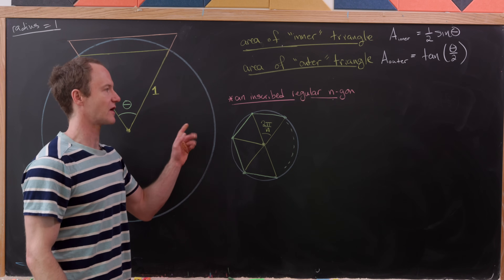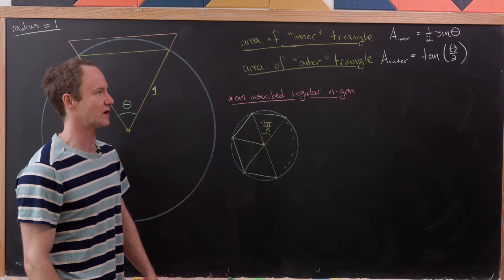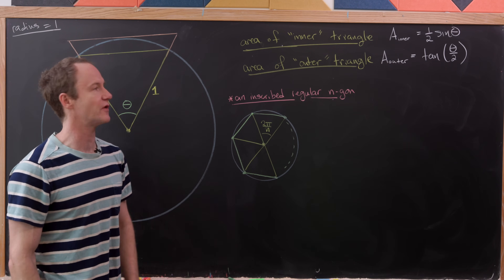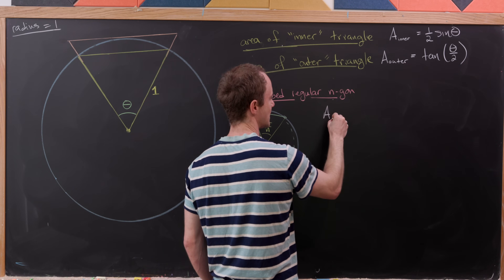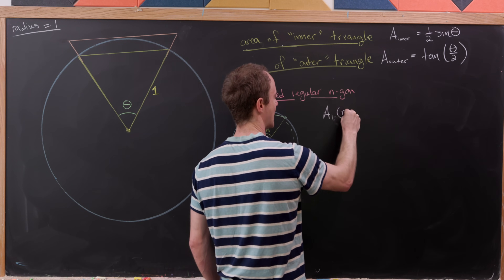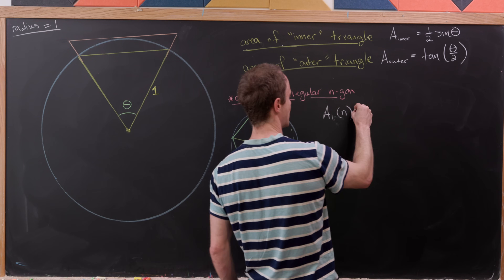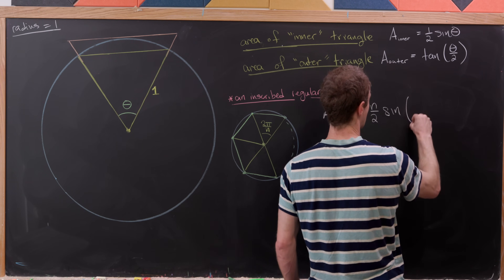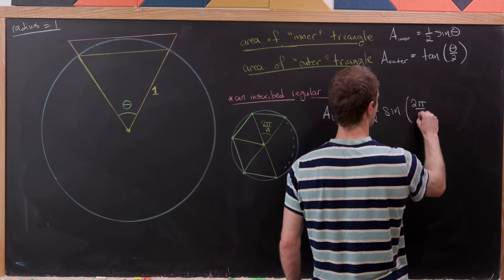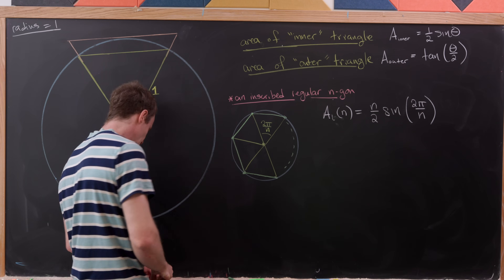The area of the inscribed regular n-gon is n times the area of one of those triangles. Using our earlier formula, the inscribed area Ai(n) equals n over 2 times the sine of 2π over n.